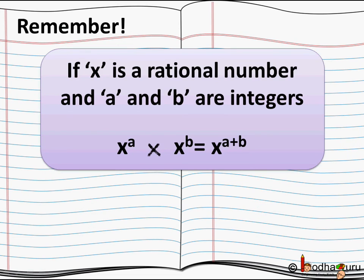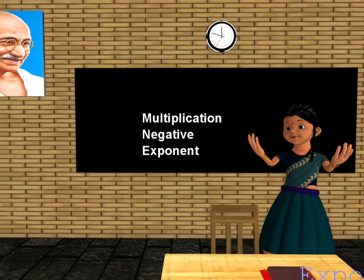Remember, children: if x is a rational number and a and b are integers, then x to the power a multiplied by x to the power b equals x to the power a plus b. This law holds true not just for a and b as whole numbers, but also for a and b as integers. That's all for now. Bye-bye children.